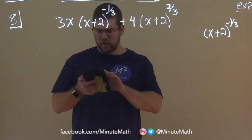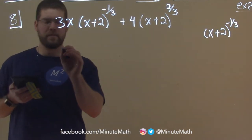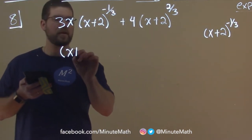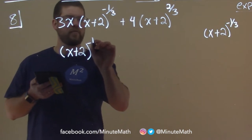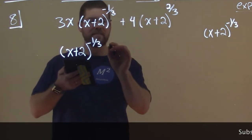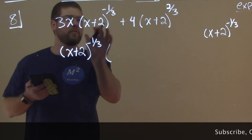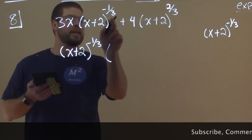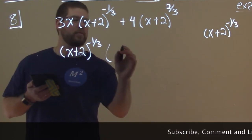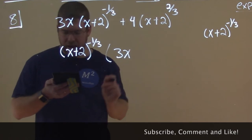Okay, so if we're going to pull that out from both parts, we have it written here, (x+2) to the negative 1/3 power, we have to see what's left over. Well here, if we pull out the (x+2) to the negative 1/3 power, we're left with just a 3x there.